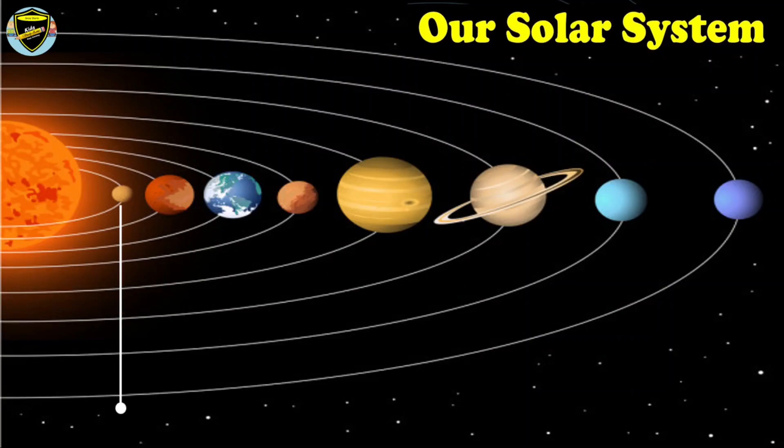Mercury is the smallest planet in the solar system.